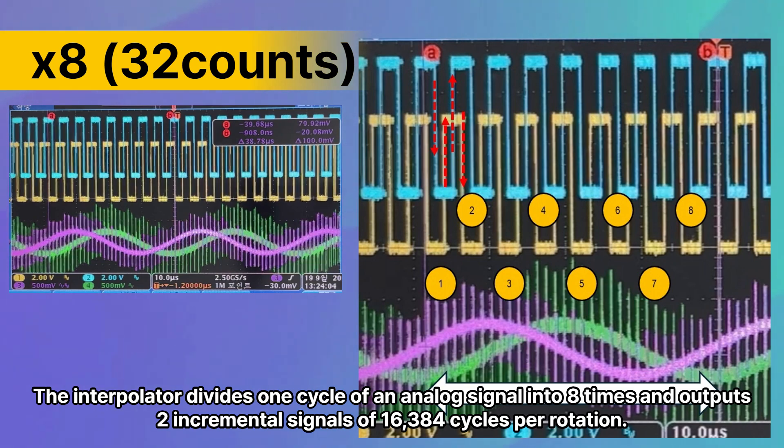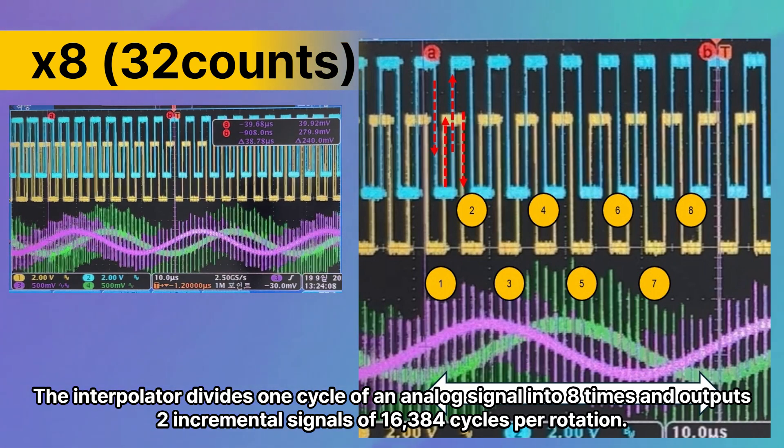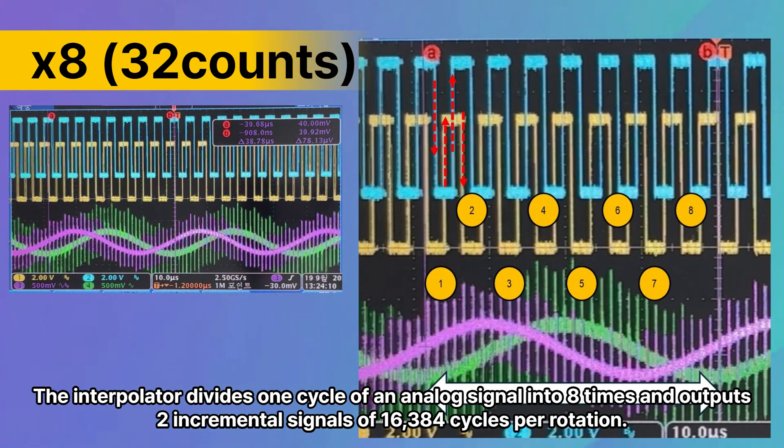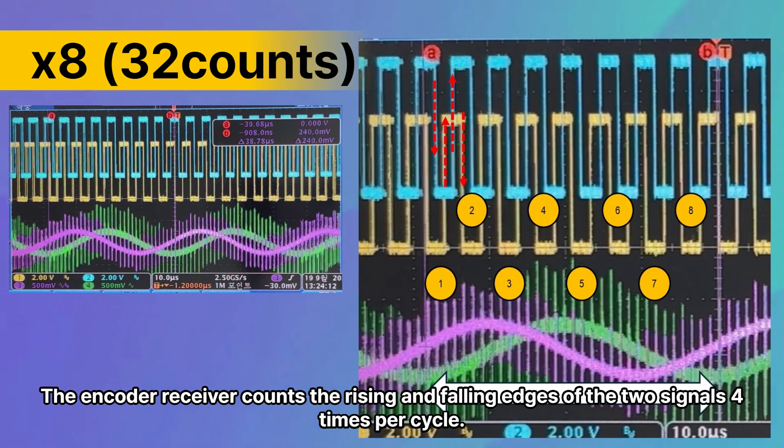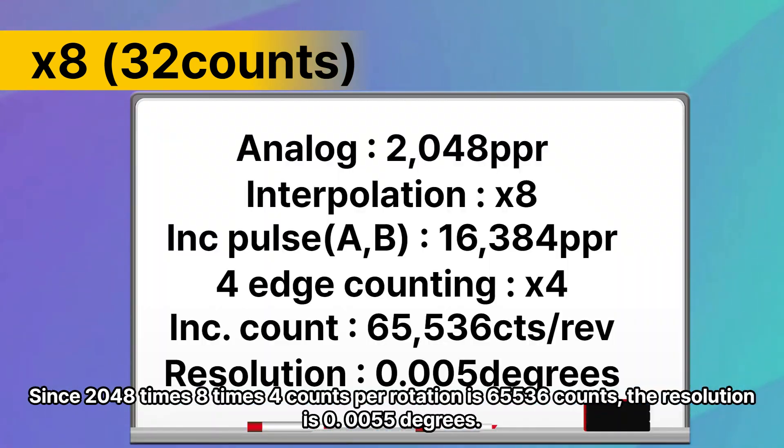The interpolator divides one cycle of an analog signal into eight times and outputs two incremental signals of 16,384 cycles per rotation. The encoder receiver counts the rising and falling edges of the two signals four times per cycle. Since 2048 times eight times four counts per rotation is 65,536 counts, the resolution is 0.0055 degrees.